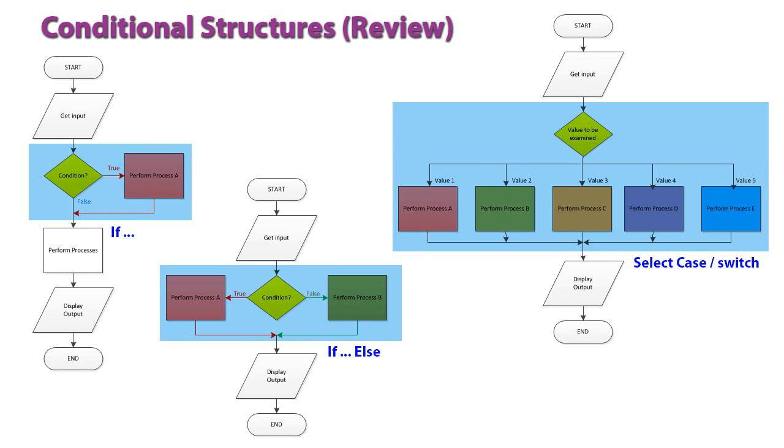We've seen how programming languages have conditional structures that allow us to branch out into two or more different branches, or to include an optional branch using an if-structure, an if-else-structure, an if-else-if-structure, or a select case in VB or switch structure in C#. We saw how conditional structures expanded our ability to write more complex programs.